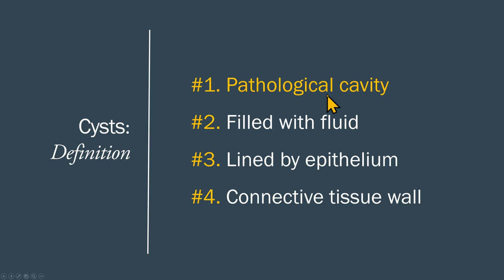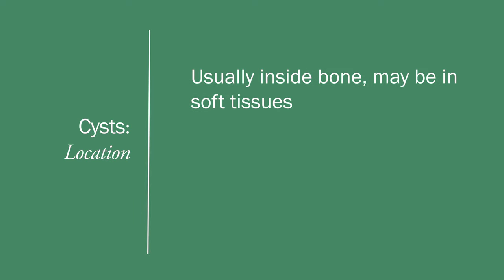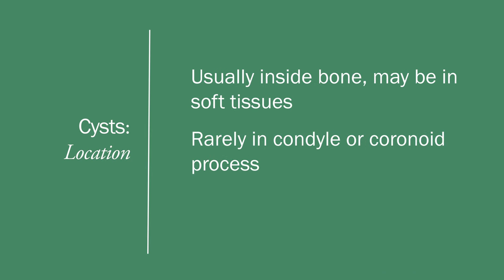On a radiographic examination, all that we will identify is a pathological cavity. The cavity will have distinct radiographic features. Most of the jaw cysts are inside the bone; today we are going to skip cysts in the soft tissues. Rarely there will be a cyst in the condyle or in the coronoid process.